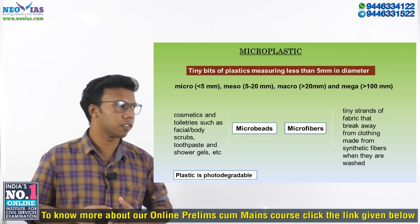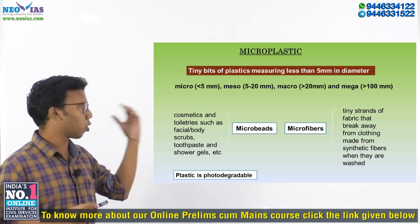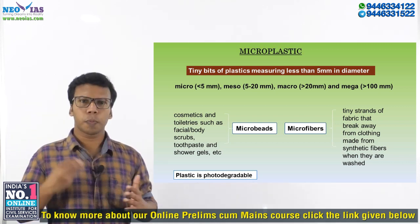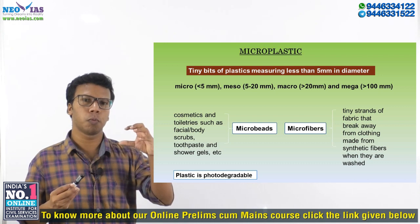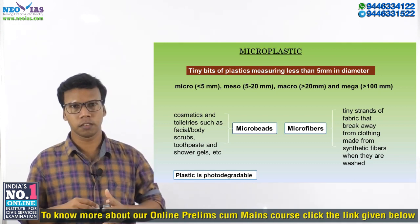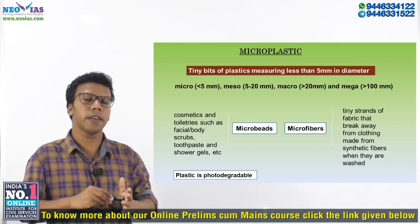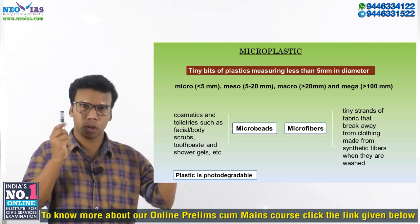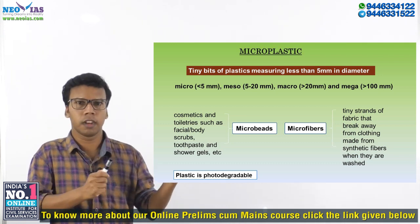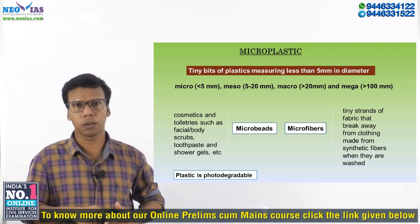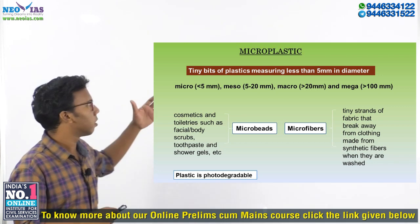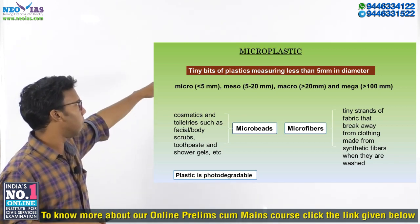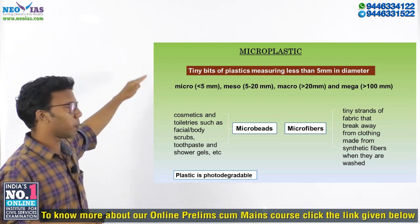Hi friends, today we are going to discuss about microbeads and also microplastics. Microplastics are tiny bits of plastics which are measuring less than 5 mm in diameter. You can see the classification of plastics there — less than 5 mm we can call it as microplastics.